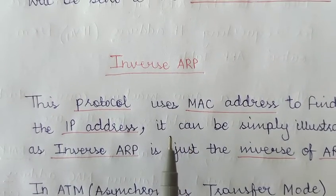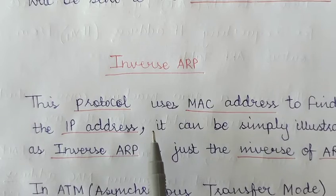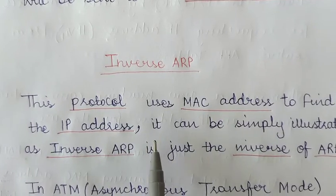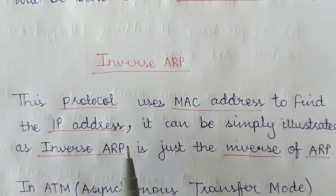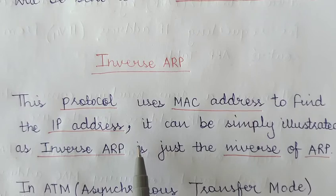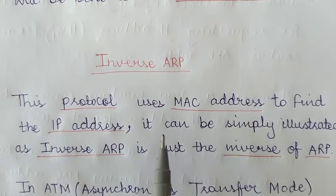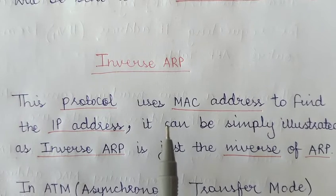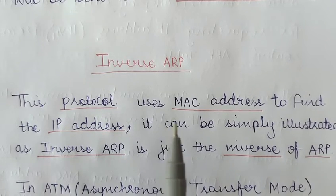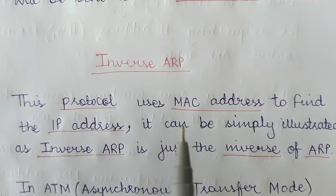Inverse ARP is a protocol that uses a MAC address to find the IP address — it is the inverse of ARP. In standard ARP, you map an IP address to a MAC address; that is, with the help of an IP address you find the MAC address.